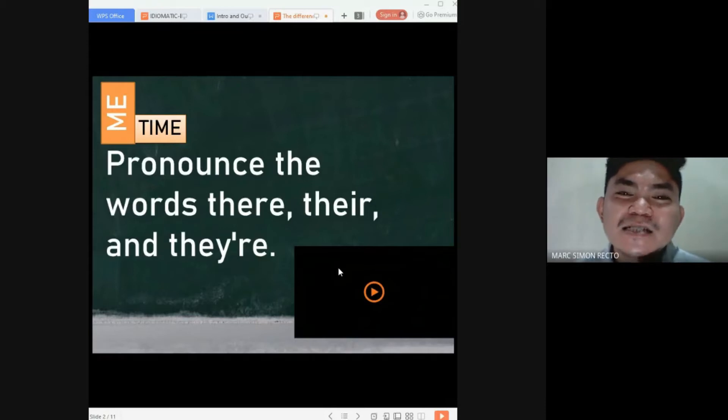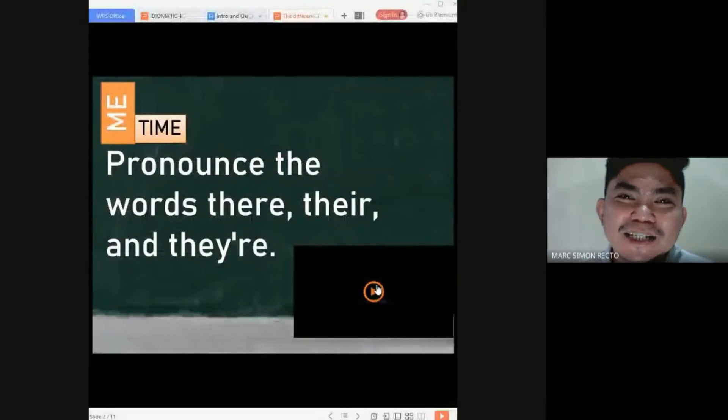For your first Me Time, the instruction here is pronounce the words there, spelled as T-H-E-R-E, there, T-H-E-I-R, and there, T-H-E-Y apostrophe R-E. It's your turn. Your timer starts now. We have five seconds. Nice one! You were able to pronounce these three different words correctly. Keep it up.